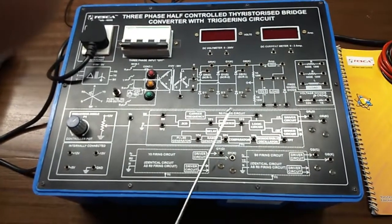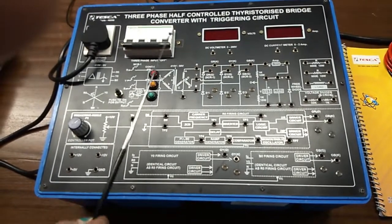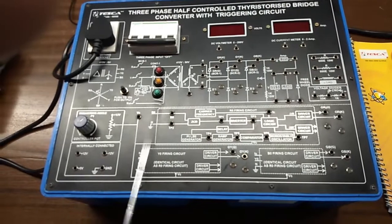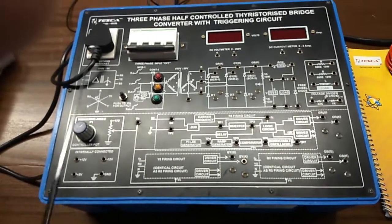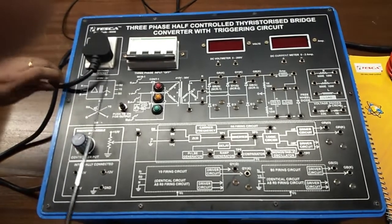This is the mimic diagram given on the trainer kit. This is the MCB switch to turn on or off the kit. This is our 3 phase connection. This is the triggering angle potentiometer. And here is an unearthing CRO socket.